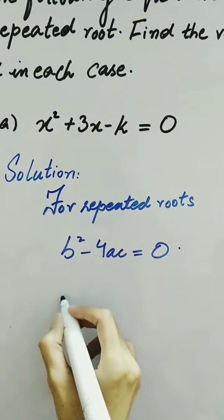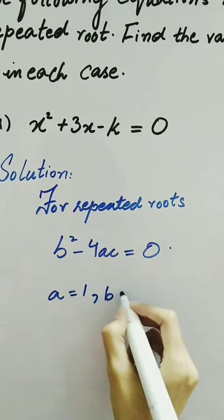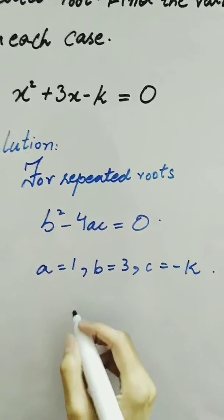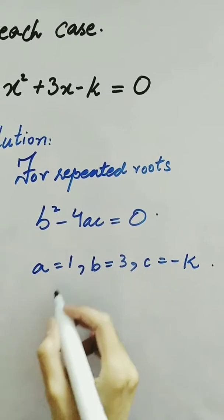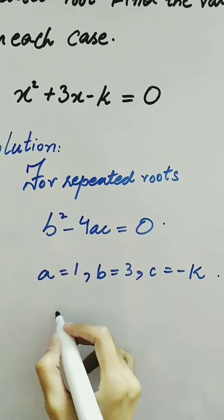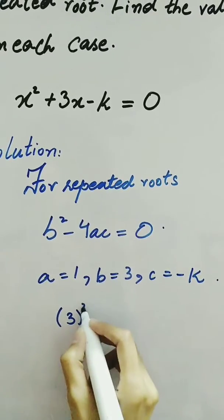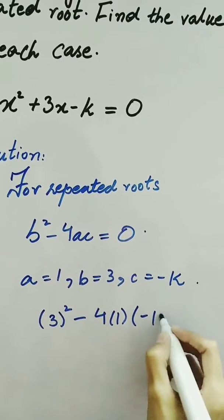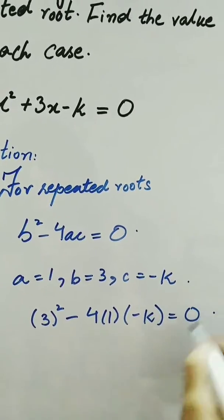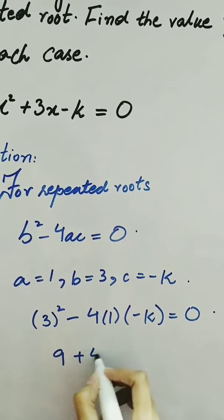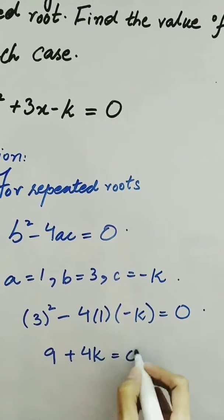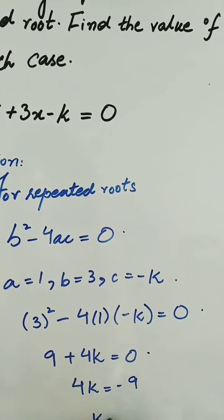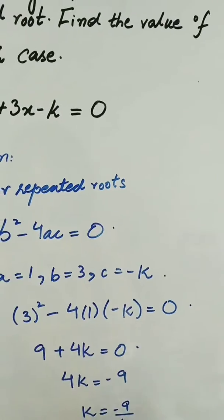In this equation, we know a is equal to 1, b is 3, and c is equal to minus k. By putting these values in the expression, we have b squared — that is 3 squared — minus 4ac, where c is minus k, is equal to 0. We have 9 plus 4k is equal to 0, or 4k is equal to minus 9, and k is equal to minus 9 over 4.